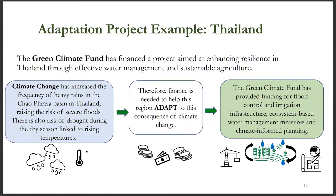The Green Climate Fund has financed a project aimed at enhancing resilience in Thailand through effective water management and sustainable agriculture. Climate change has increased the frequency of heavy rains in Thailand, increasing the risk of severe floods. There is also risk of drought during the dry season linked to rising temperatures. Therefore, finance is needed to enable this region to adapt to these consequences of climate change. The Green Climate Fund has provided funding for flood control and irrigation infrastructure and other related projects that improved climate change adaptation.